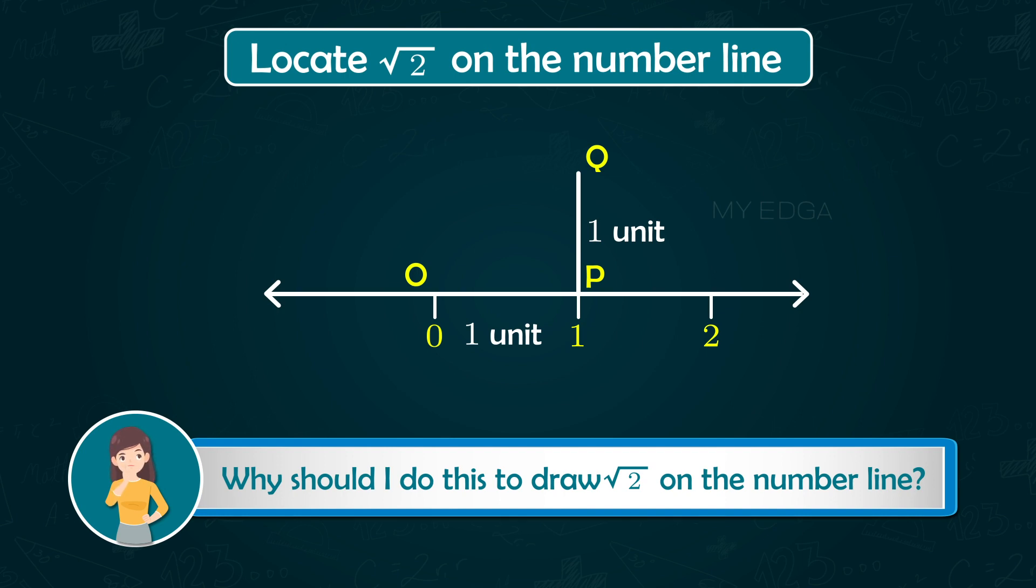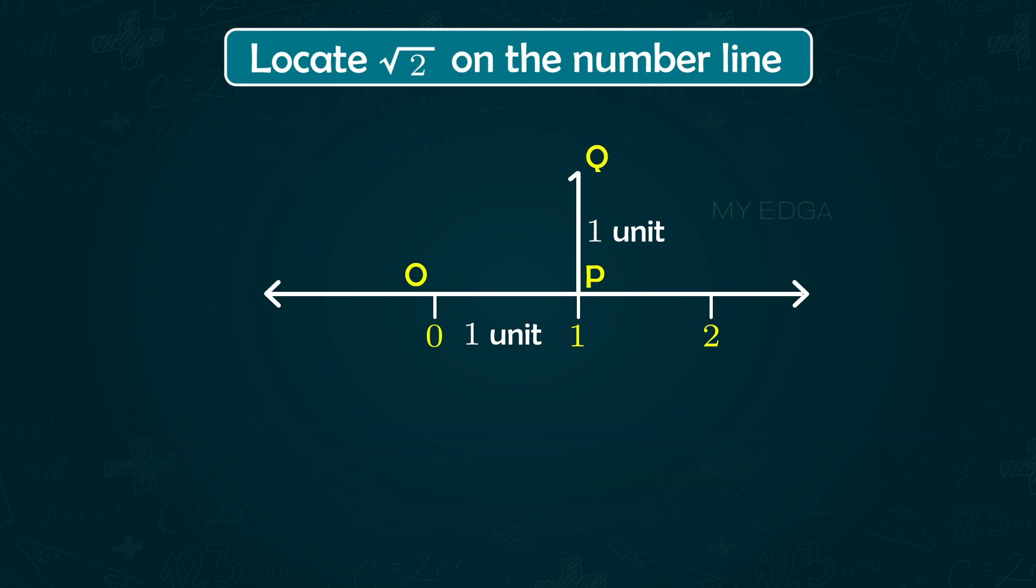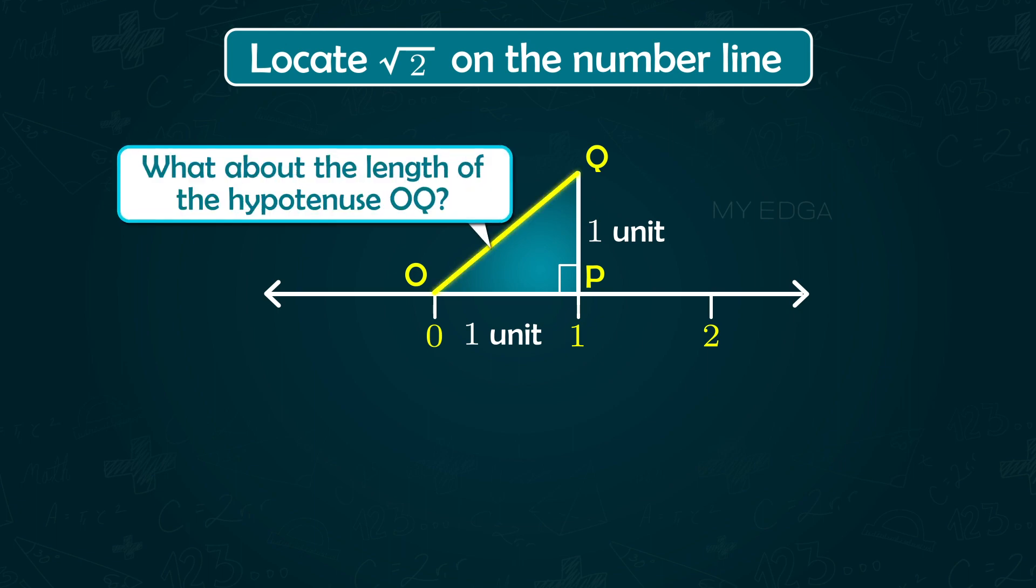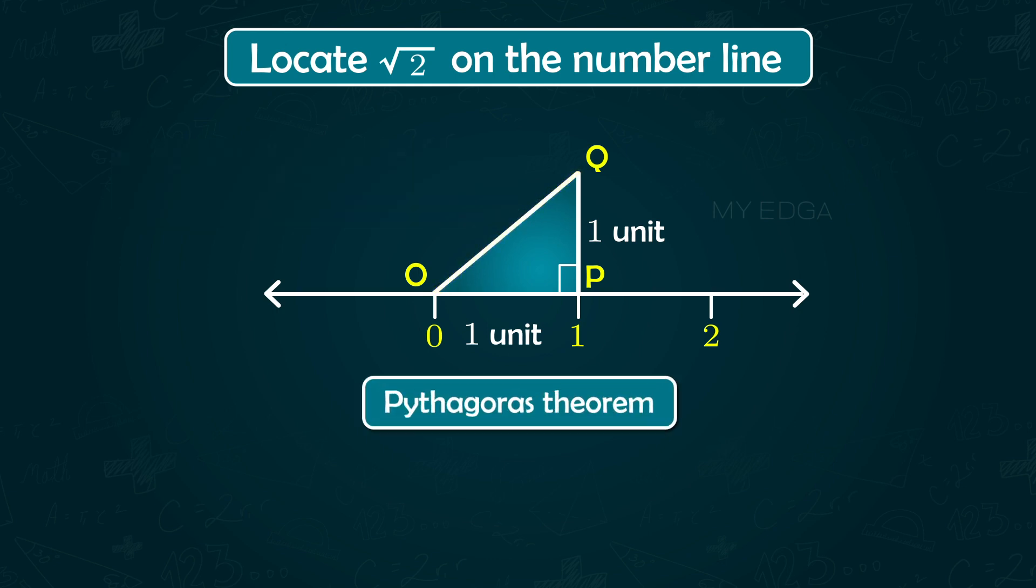Here when we join Q to O, a right-angled triangle OPQ is formed, right-angled at P. All right, now what about the length of the hypotenuse OQ?